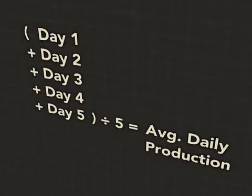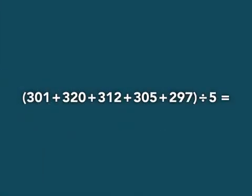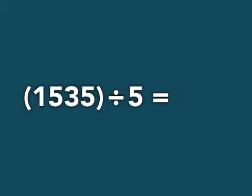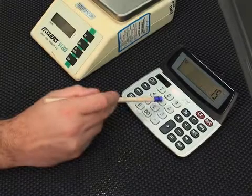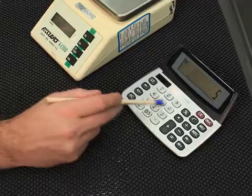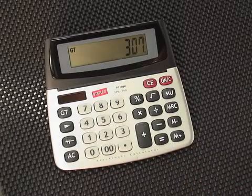Using this formula, we first calculate the total daily production during five days, and then divide the result by five days. When performing the calculation, the parentheses ensure that the five numbers inside the parentheses are totaled first. Once totaled, the resulting equation will be 1,535 divided by 5. Once calculated, the average daily production for these five days is 307 parts.